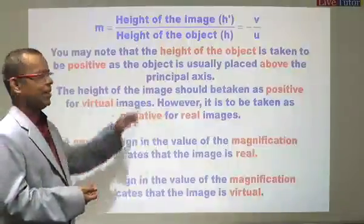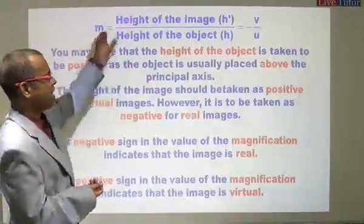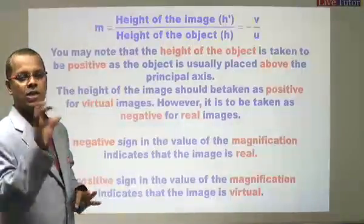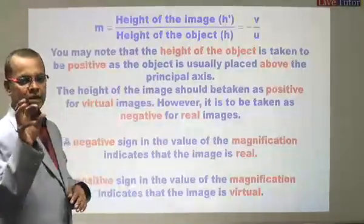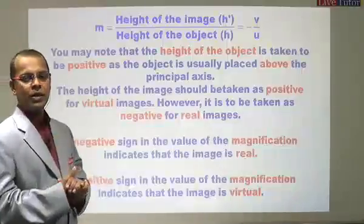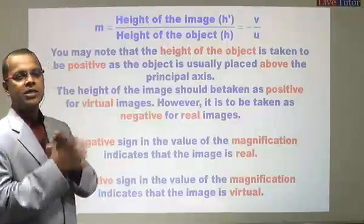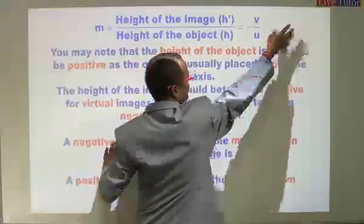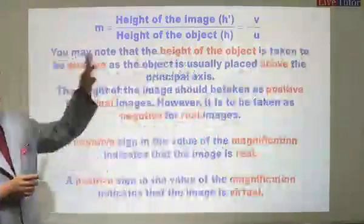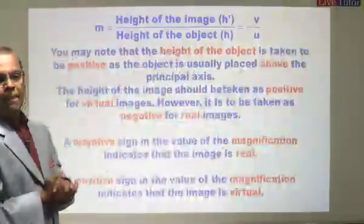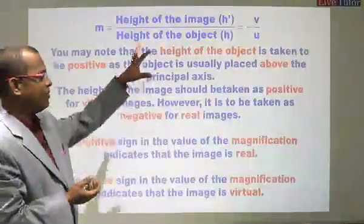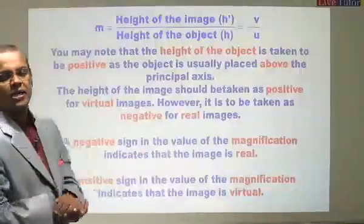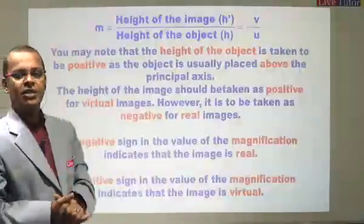And the next one is the negative sign. After finding out the magnification value, you have to see whether it is showing negative value or positive value. If the magnification has got negative value, that means that the image is a real one. So that means if you get minus 2.5, something like that, if the value is minus, the image is real. And similarly, if the sign is positive, then we can say that the image is virtual.